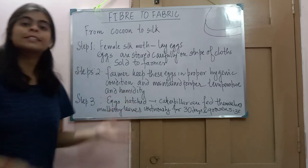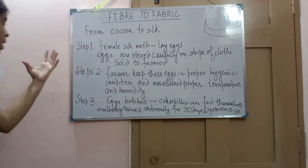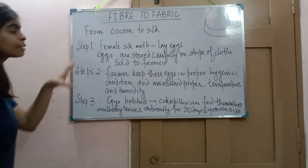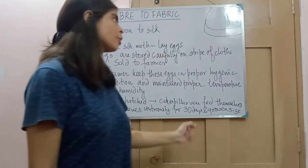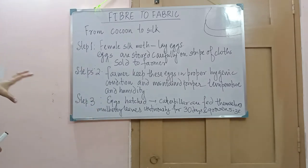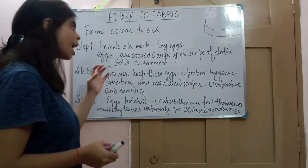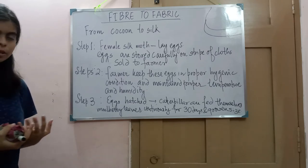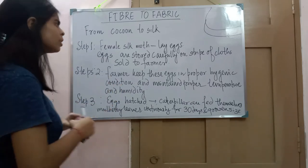Let's discuss how to get silk from a cocoon. There are various steps involved. The first step is that the female silk moth lays hundreds of eggs. These eggs are stored carefully on a strip of cloth and maintained in a proper hygienic condition, and then they are sold to farmers — the farmers who do sericulture.